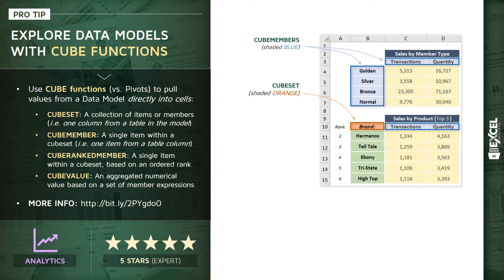Within cube sets, you have something called cube members, shaded in blue in the visual. A cube member is a single item from within a cube set — one item out of a table column. Here we're looking at different values within the membership column in our customer table: Gold, Silver, Bronze, and Normal. Note that we also use cube members to define quantitative or calculated measures like Transactions or Quantity.